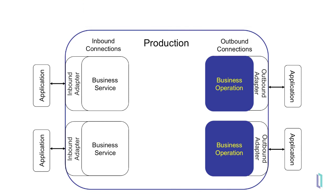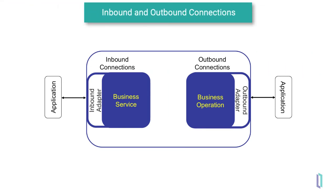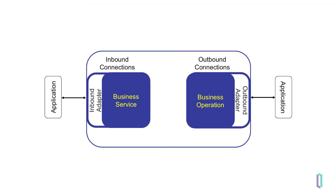Business operations send data from a production to other applications. For example, if a production needs to send a hospital admit message to an insurance application, it would be sent through a business operation. A production would use a business operation to send a lab report to a clinician's office. A business operation can also send a request and receive a response for further processing. Business services and business operations handle the technology used for connections such as TCP/IP, flat files, SOAP, FTP, and HTTP.